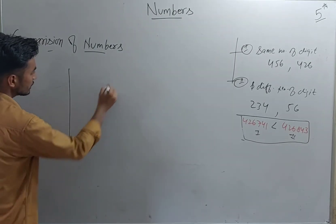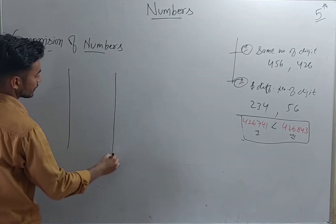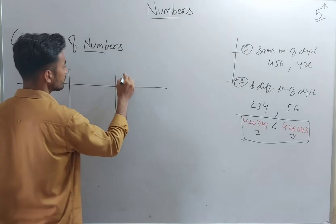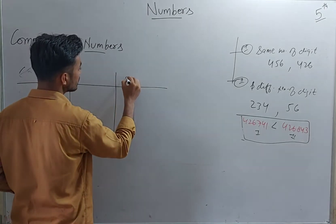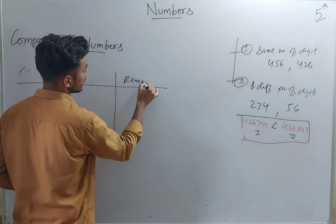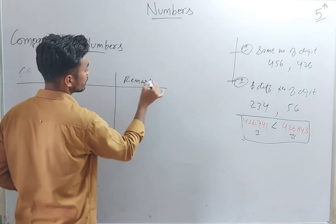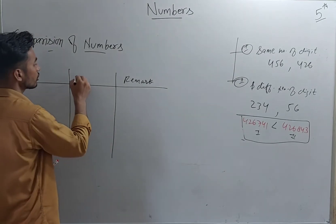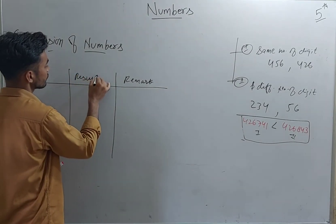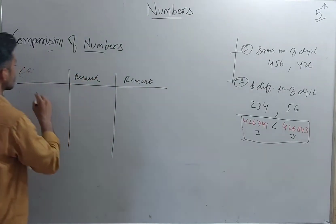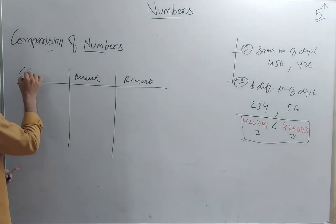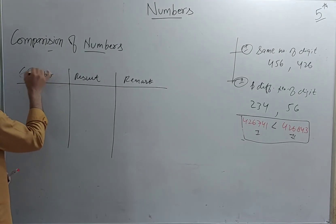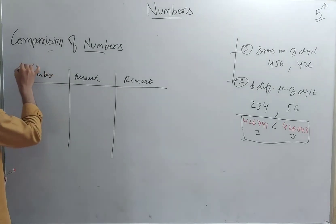Here in the tabular form we have three rows. In the last column we write the remark. In the middle column we write the result. In the first column we write the numbers or the digits.